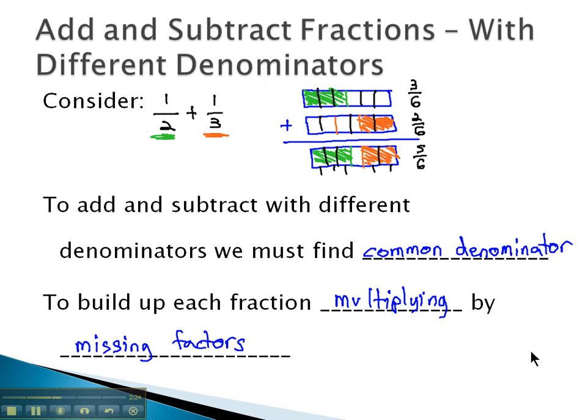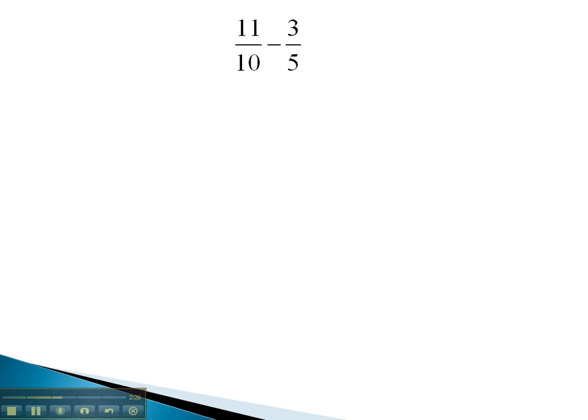So let's try a few examples. In this problem, 11 tenths minus 3 fifths, we would want to identify the least common denominator, or least common multiple, of both 10 and 5.